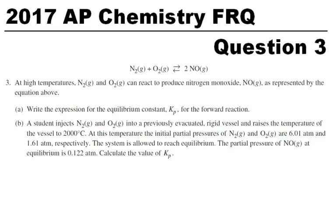I'm going through the 2017 AP Chemistry FRQ, question number three. This is a ten-point question. It gives us an equation: nitrogen plus oxygen turns into two NO. At high temperatures, these two reactants can react to produce nitrogen monoxide. So the first thing is to write the expression for the equilibrium constant Kp for the forward reaction. These are all gases, so we want to write Kp.